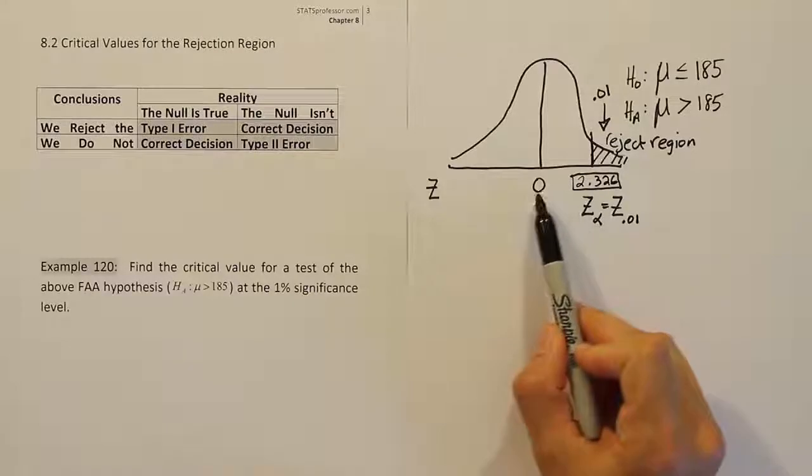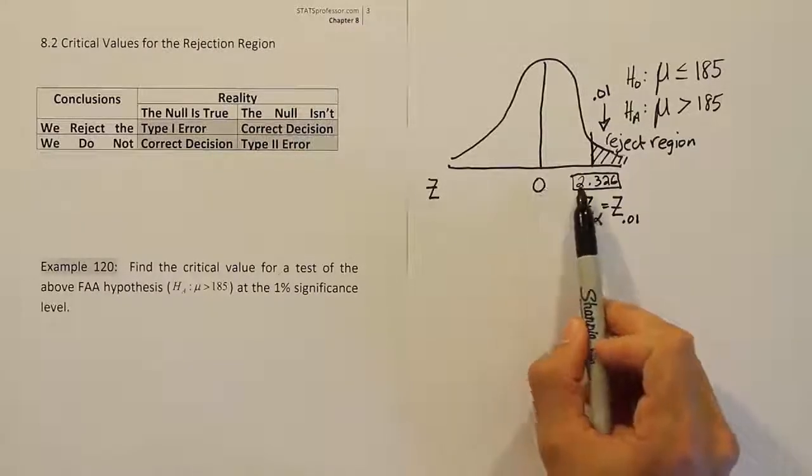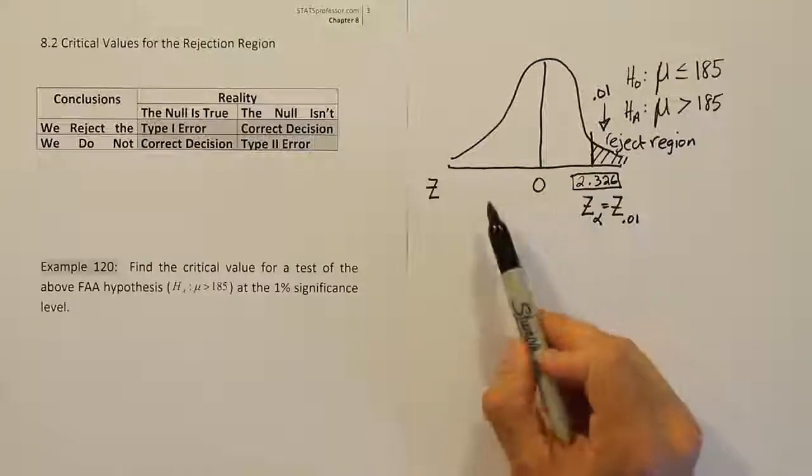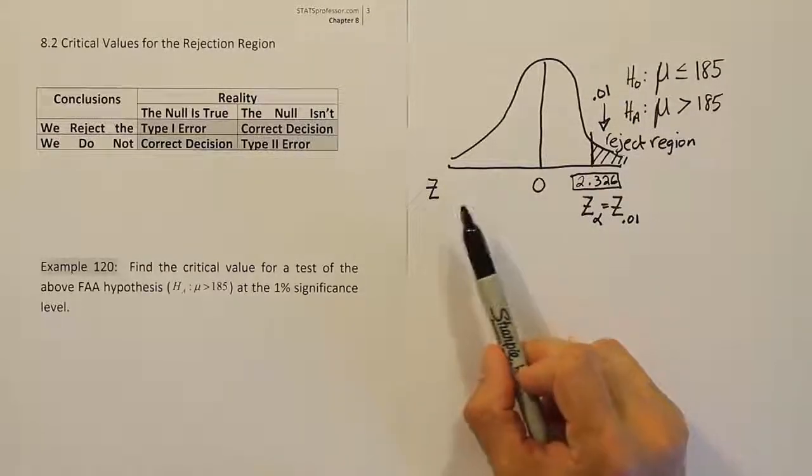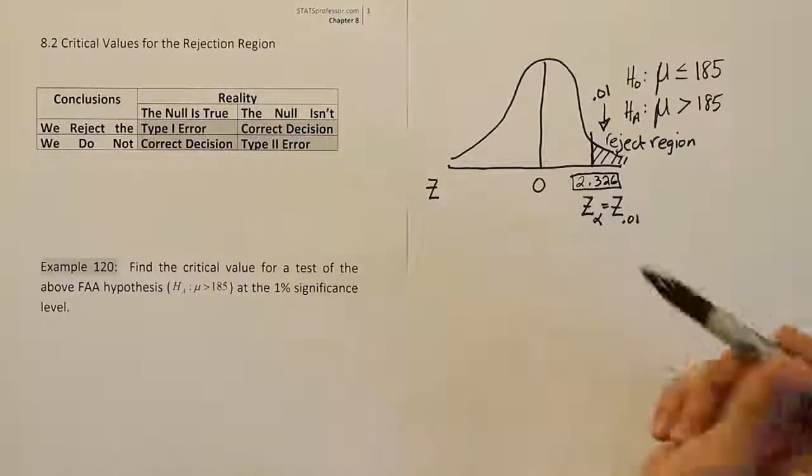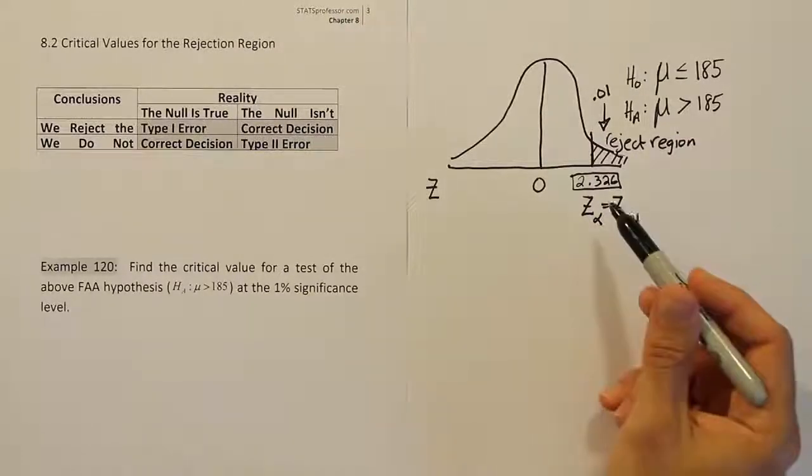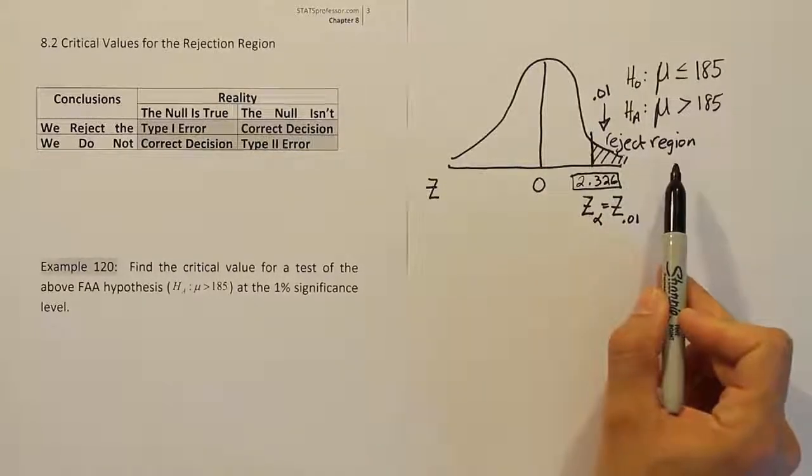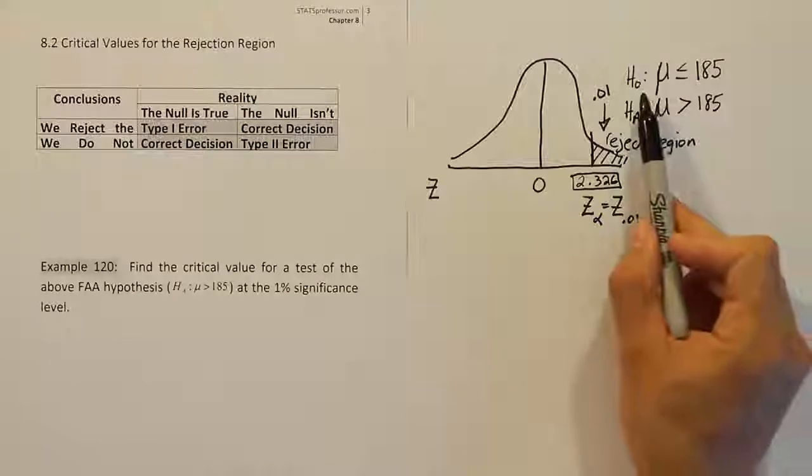And notice it's positive as it should be because it's to the right of zero. Remember, the table won't give us a negative value, so if this had been on the left side, we would have had to remind ourselves to put a negative first. But because it's on the right-hand side, it should be positive, and that's our critical value. So basically, if our test stat is larger than that value, we'll be in the rejection region, and we would say that we should reject the null hypothesis.